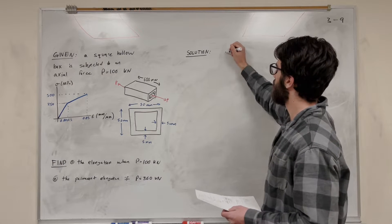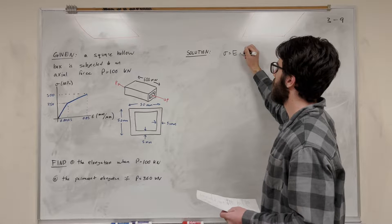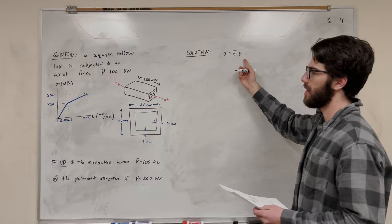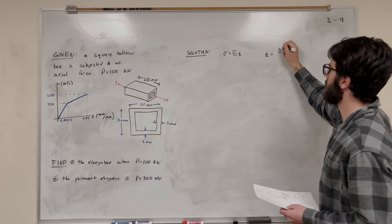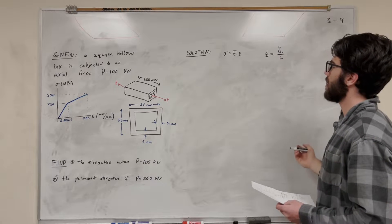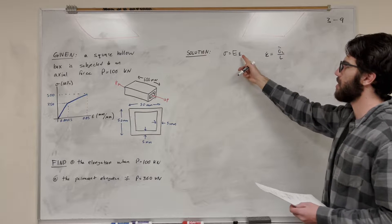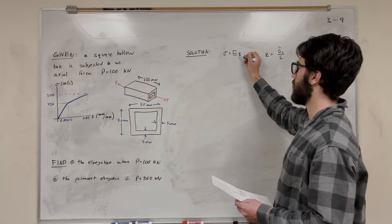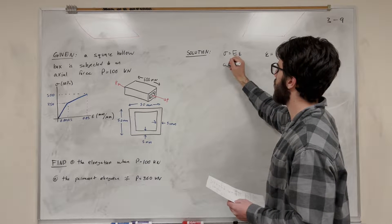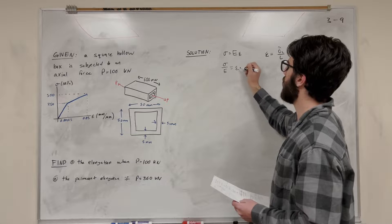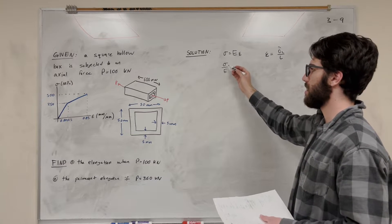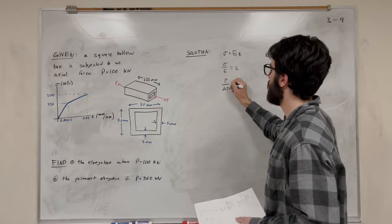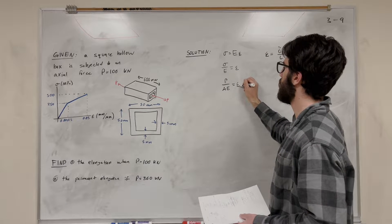We know that stress is equal to the modulus of elasticity times strain. Strain has to do with delta — strain is equal to the change in length over the original length. So if we're solving for strain, let's divide by E: stress over E is equal to strain. We don't know what stress is, so stress can be expanded — stress is force over area. So then you get that force over area times E is equal to strain.